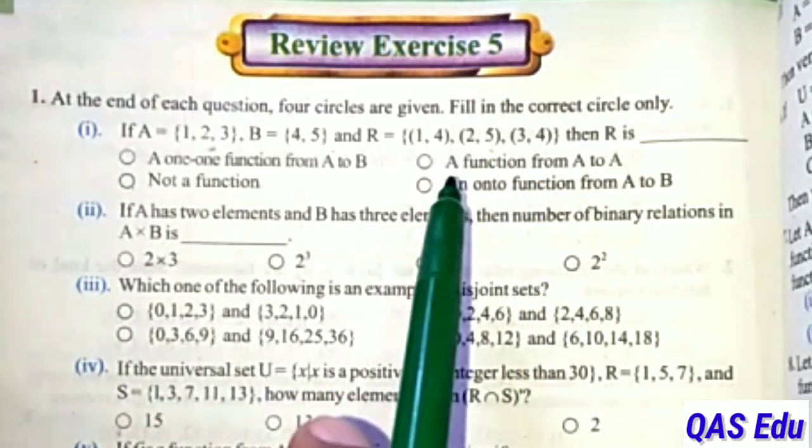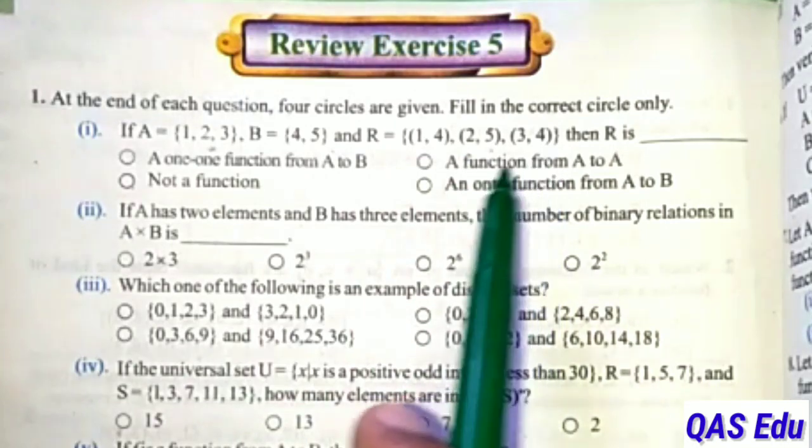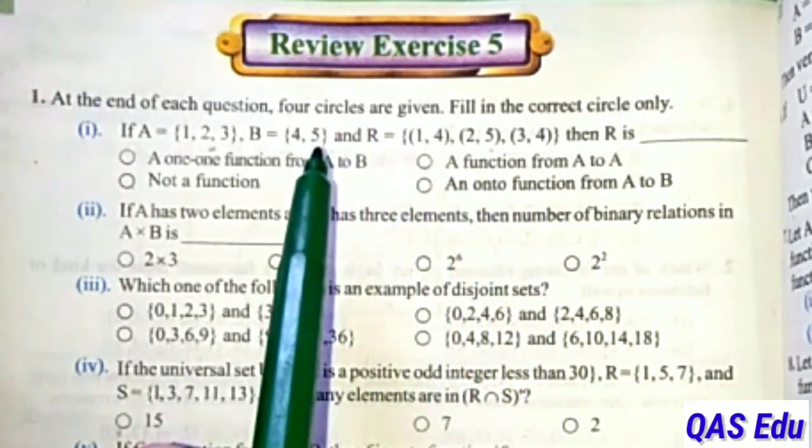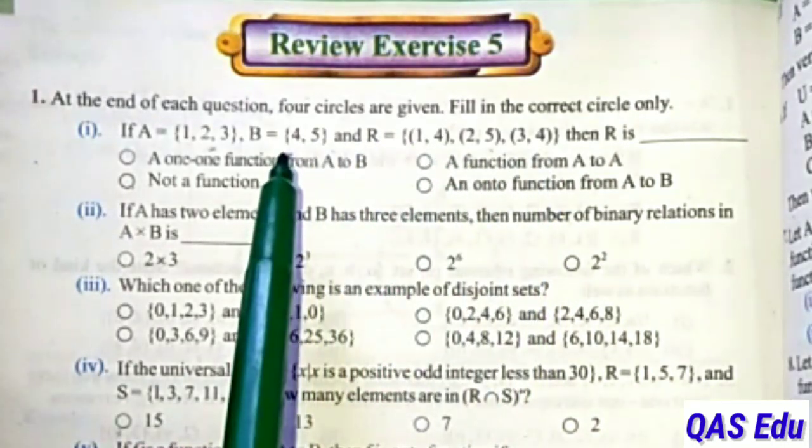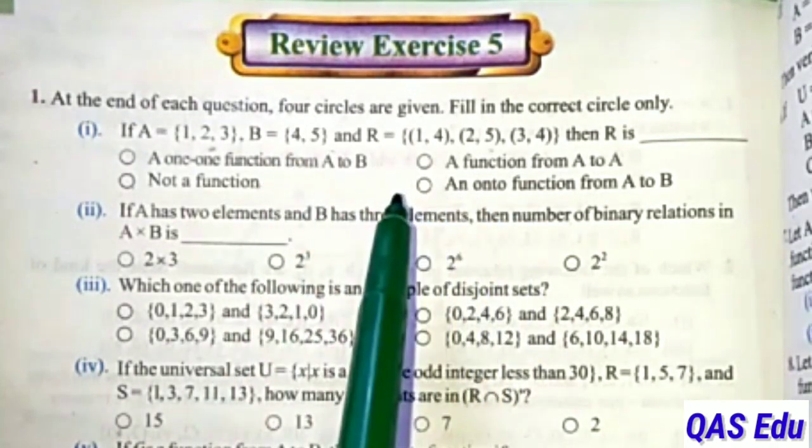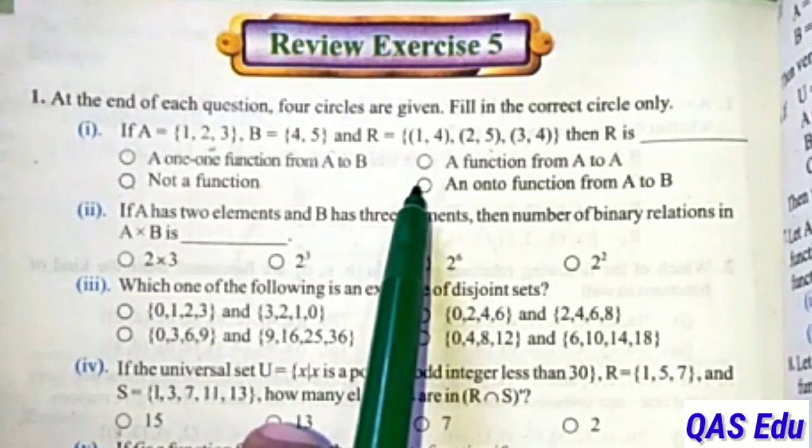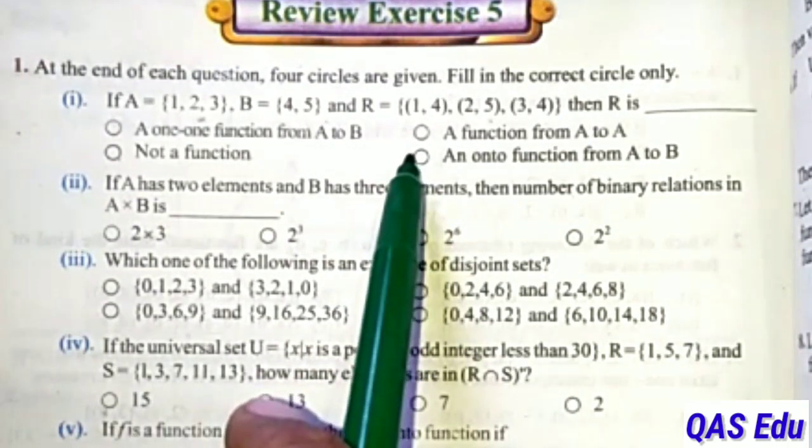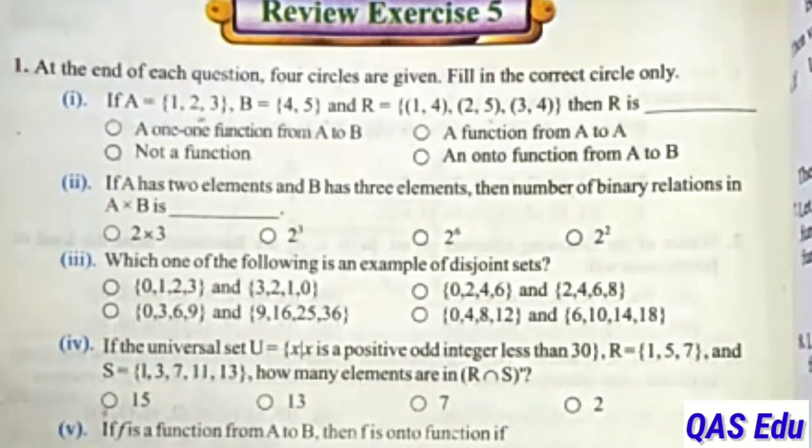The range and B are the same, so it's an onto function. In this case, the correct option is onto function. Fill that circle.